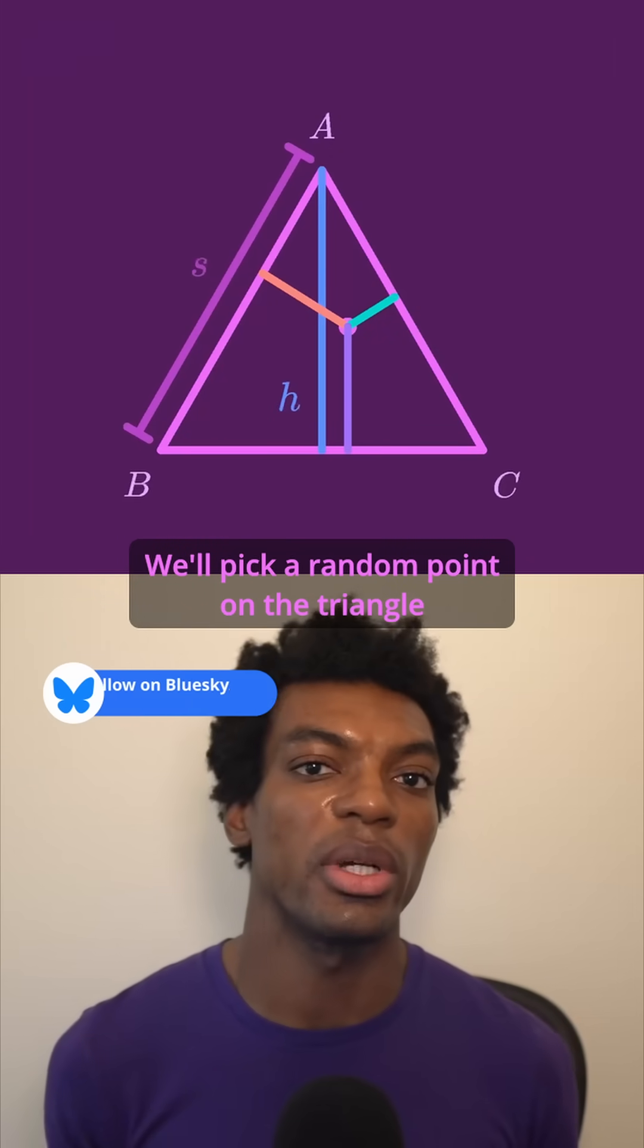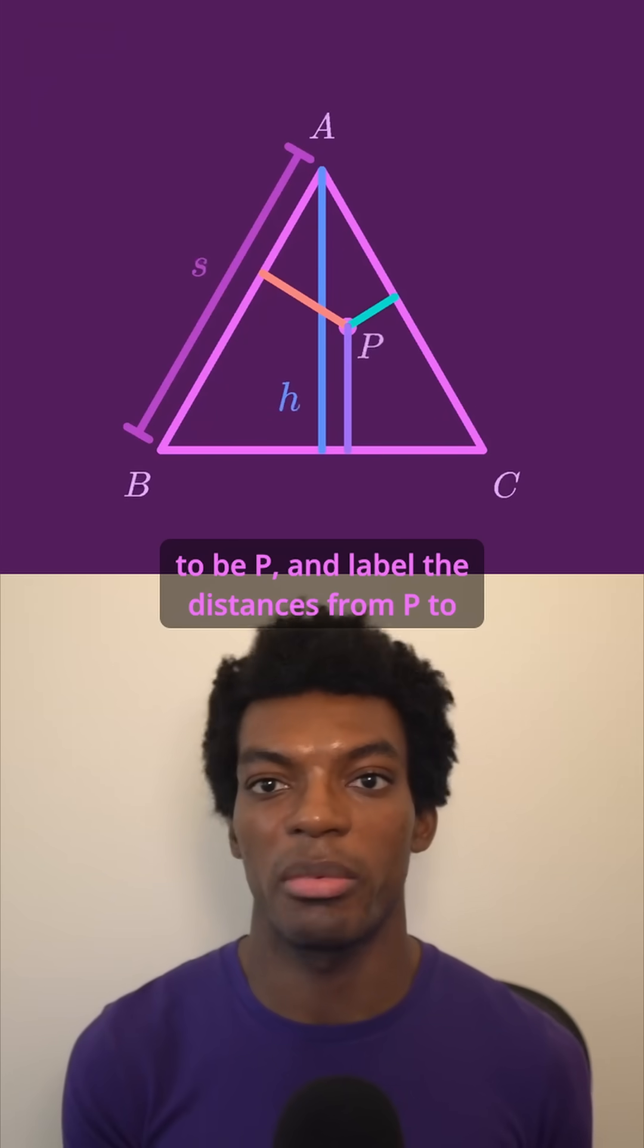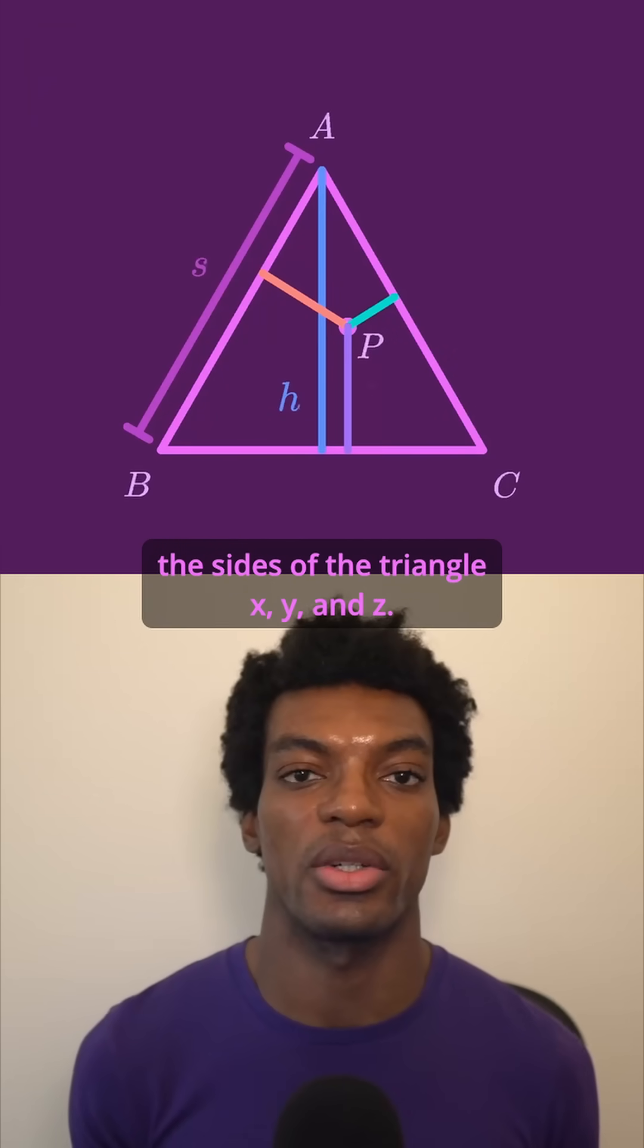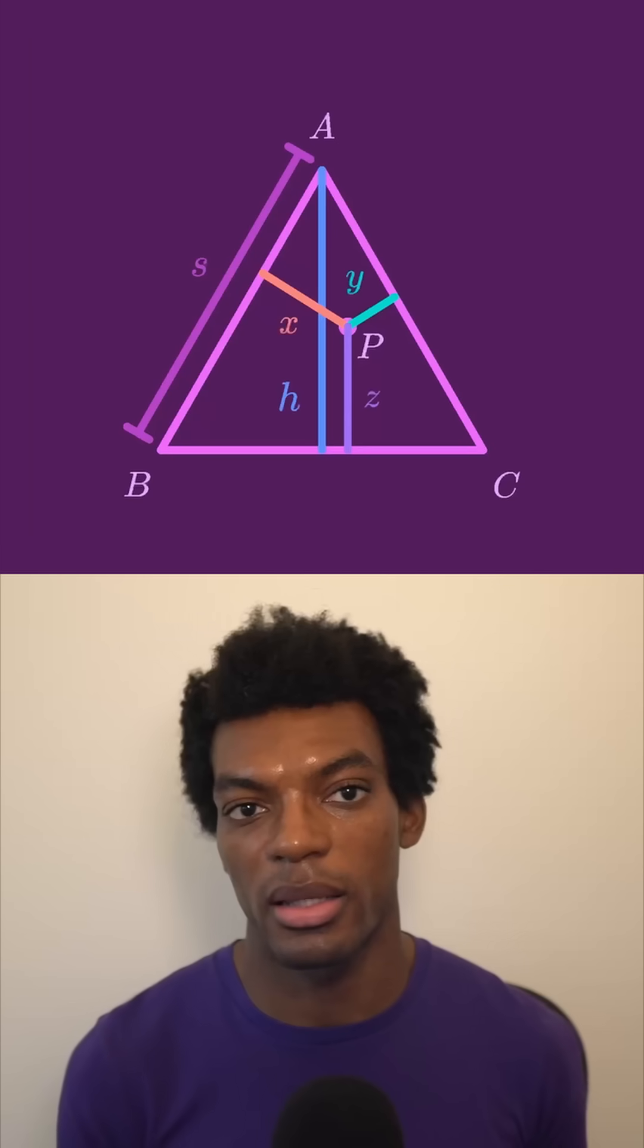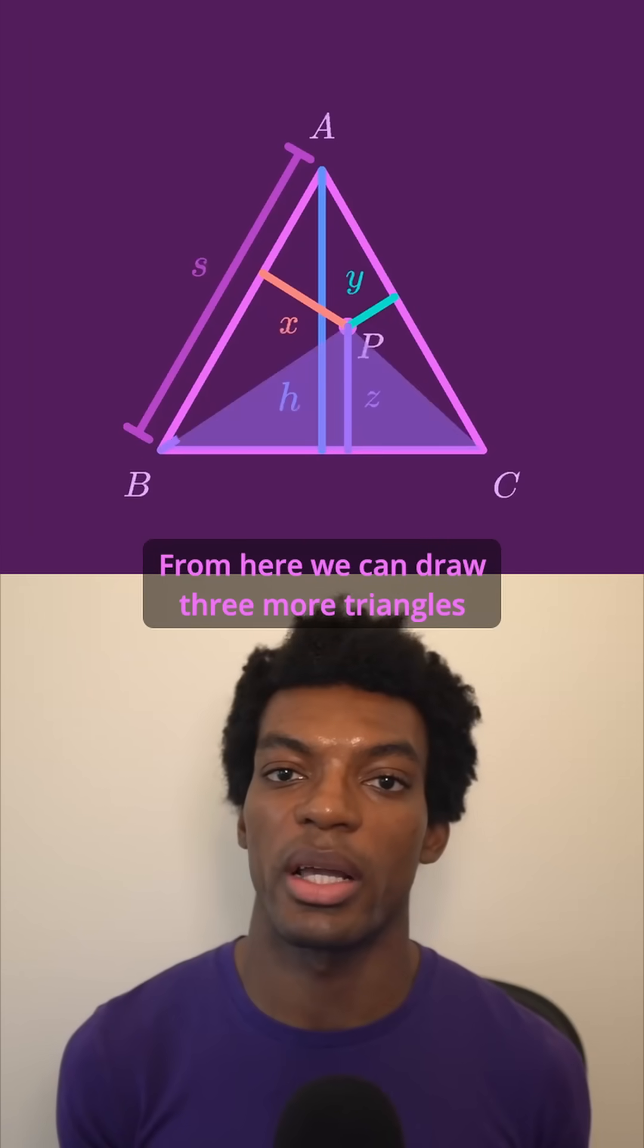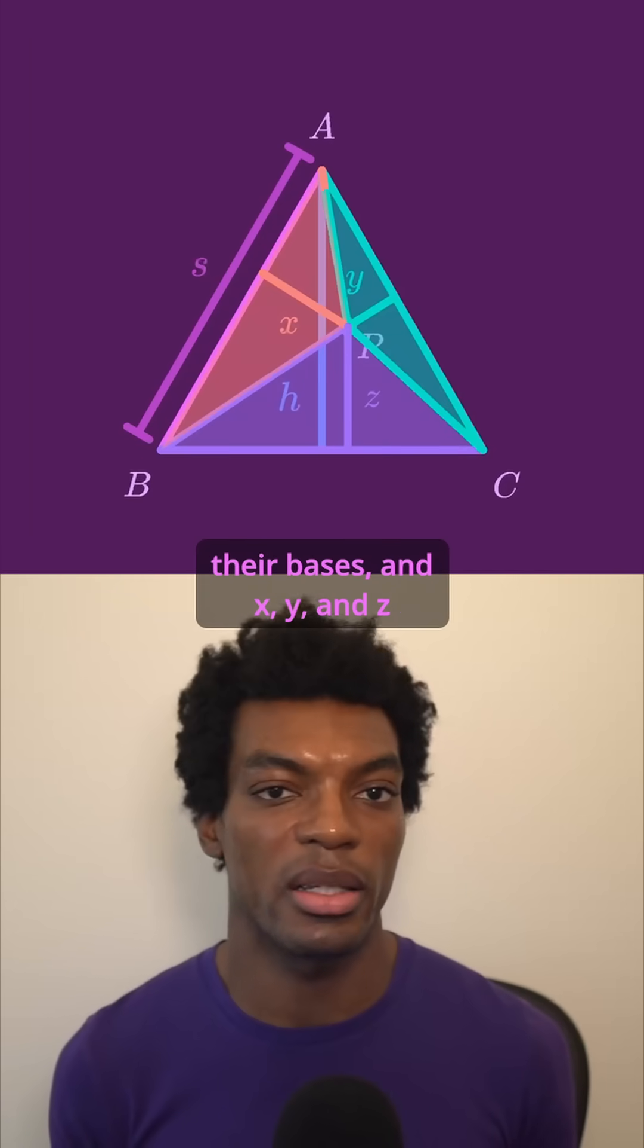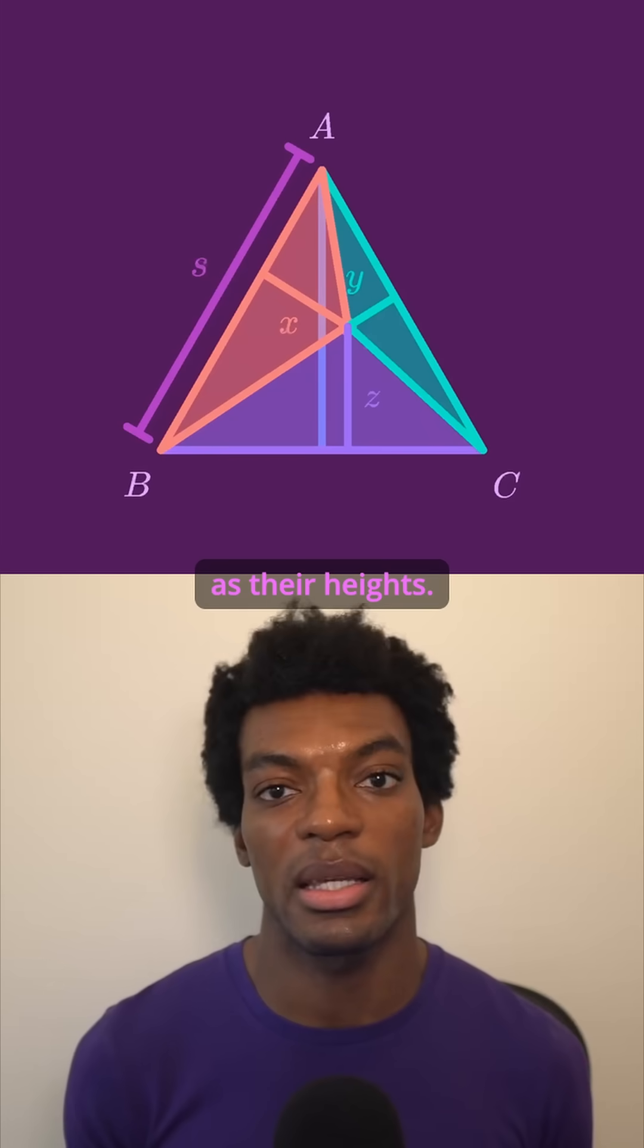We'll pick a random point on the triangle to be P and label the distances from P to the sides of the triangle X, Y, and Z. From here we can draw three more triangles with the sides of the original triangle as their bases and X, Y, and Z as their heights.